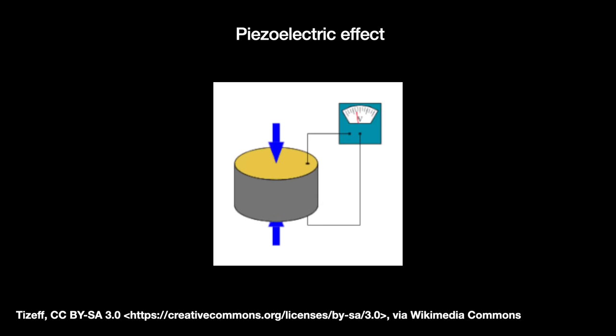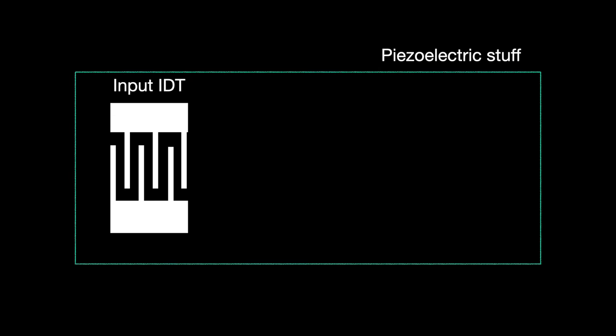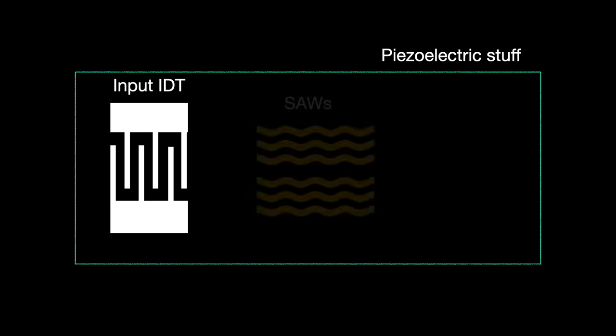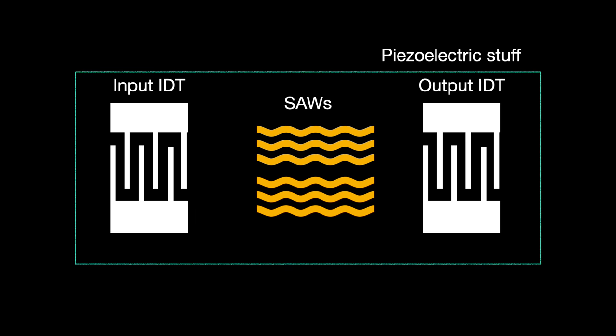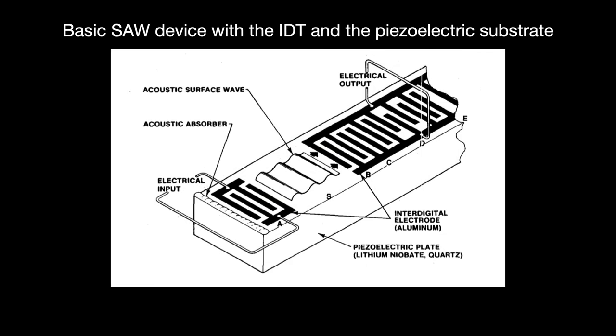When the first IDT, an input IDT, receives a radio signal that is within the desired frequency band, it will convert that radio signal into mechanical energy. That mechanical energy manifests as a unique surface acoustic wave traveling outwards from the IDT across the surface of the quartz bar. The wave then hits another IDT terminal, often called the output IDT, and it turns the wave into an electrical signal via the piezoelectric effect. This electrical signal can now enter the chipset to be interpreted.